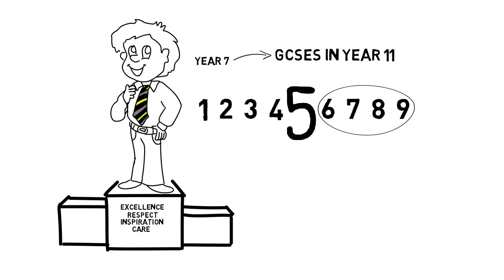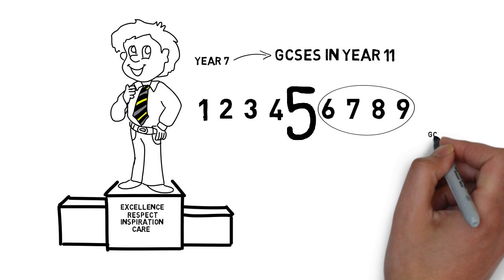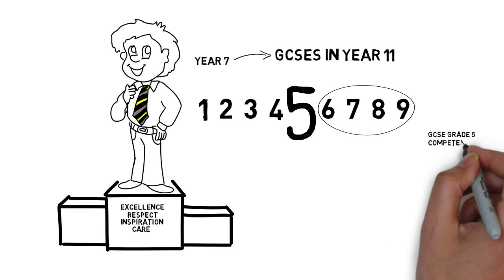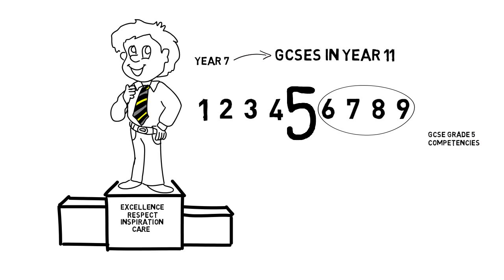Each department at Manor High School has looked at what students will need to know and be able to do at the end of Year 11 to be aiming for a GCSE Grade 5. We call these competencies. This is the threshold for Year 11. We aim for as many students as possible to exceed the threshold and gain Grades 6 to 9.